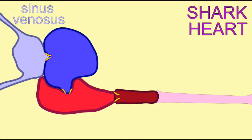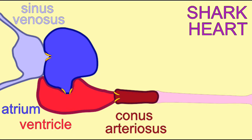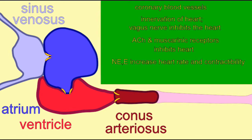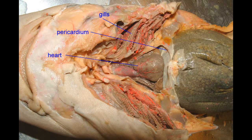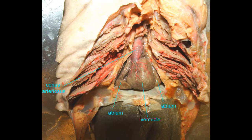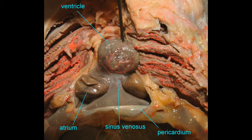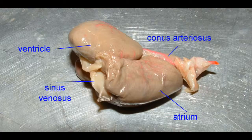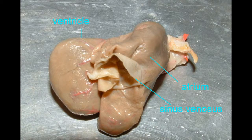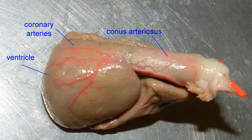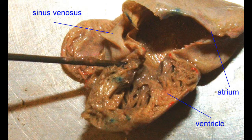Shark hearts are larger and more muscular, given the more active lifestyle of the jawed fishes compared to the jawless fishes. Blood enters into the sinus venosus from the systemic veins, and then is pumped into the one single atrium. From there, blood enters the ventricle, which has a much thicker wall, given that it is going to create the blood pressure which circulates blood throughout the body, and into the conus arteriosus, which in higher vertebrates is divided to form the aorta and pulmonary trunk.